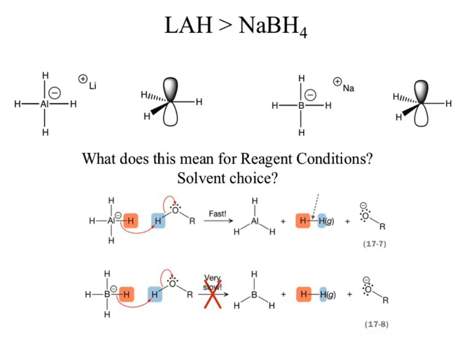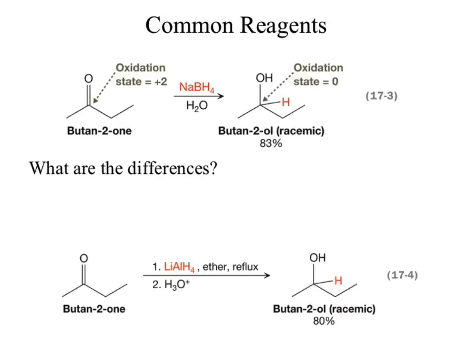When we look at sodium borohydride, we almost always see it in a water or alcoholic environment — most often ethanol, simply because it's cheap. When we move to lithium aluminum hydride, we will never see an alcoholic solvent because we need the aprotic environment. Lithium aluminum hydride's H⁻ is so strong that the acid-base reaction would be too fast and we wouldn't get the nucleophilic addition.